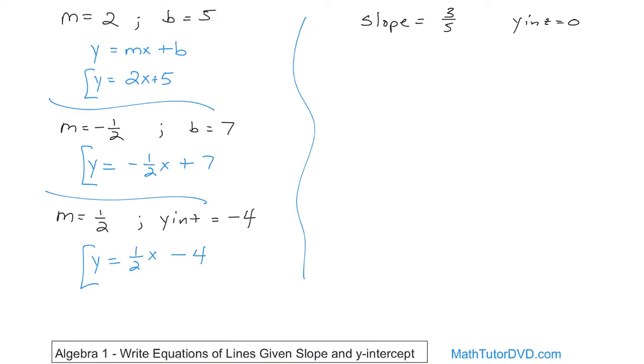Well, same thing. y equals mx plus b, so y equals three-fifths x plus b, which is zero, but since you are just adding zero, you can just drop it, so you can just say three-fifths x. So that would be how you would actually write that.